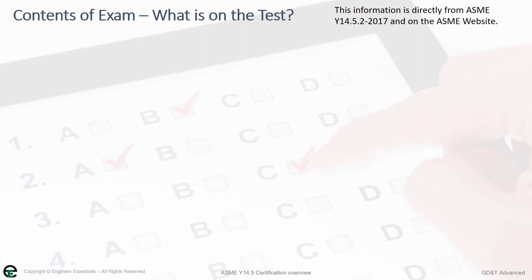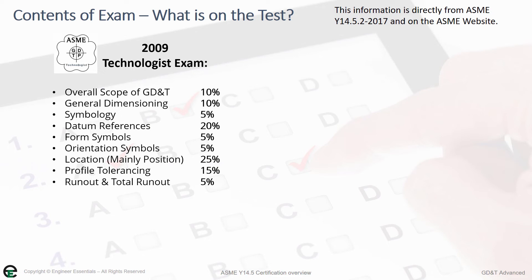The information we're going to share in these exam prep sections is available for free on the ASME website, plus our personal experience taking the test. On the 2009 Technologist exam, the breakdown is: 10% overall scope of GD&T, 10% general dimensioning, 5% on knowing the symbols, 20% on datum references, 5% on both form and orientation, 25% on location — mainly position, as it's very rare to find questions on concentricity or symmetry — 15% on profile tolerancing, and 5% on runout and total runout. So datums, location, and profile are the big hitters on this test.